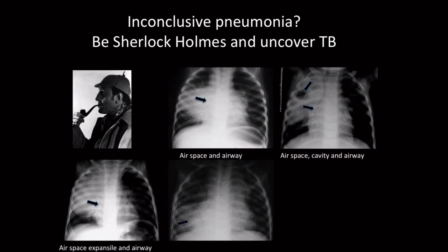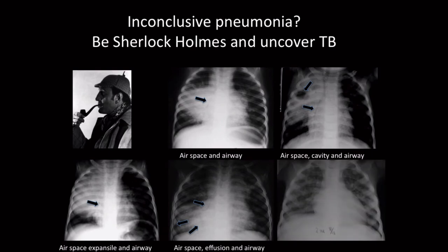One more thing: a patient with a lot wrong with him — there's an effusion tracking up the side, a lamellar effusion; there's airspace disease; you can't see the right cardiac margin. And look through the density — there's your compression.